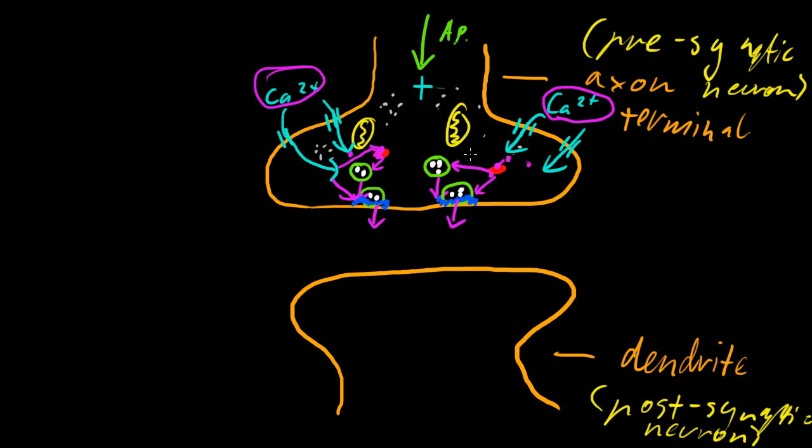But of course, they not only just make them dock, they also encourage them to be released. So they have two actions. One is to cause these synaptic vesicles to dock on the SNARE proteins, and the other is to get them to actually be released. So we have our neurotransmitter out here in what's called the synaptic cleft.